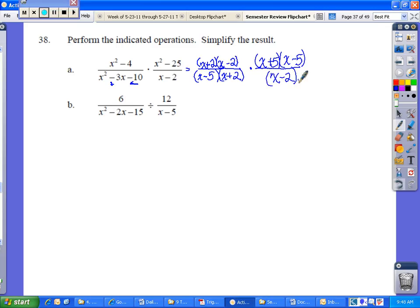So as you can see, I can now do some cross-cancelling before I multiply. You notice x minus 2 and x minus 2? So you can cross those out. x plus 2 is on the top here and the bottom here, so they can cancel out. And then x minus 5 is both on the top here and the bottom here, so I can cross those out.